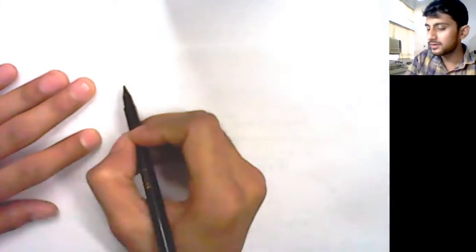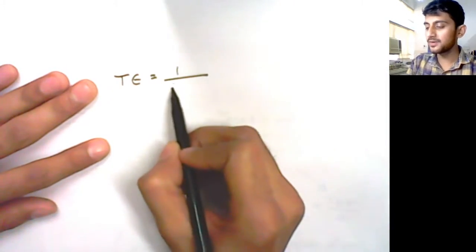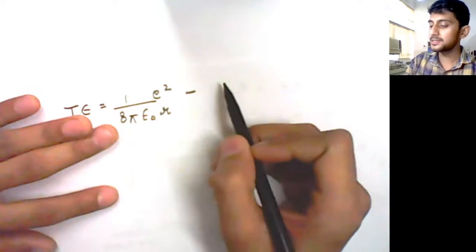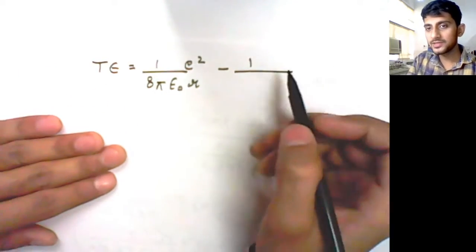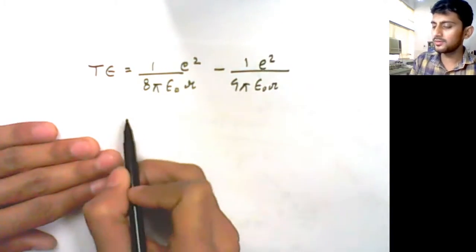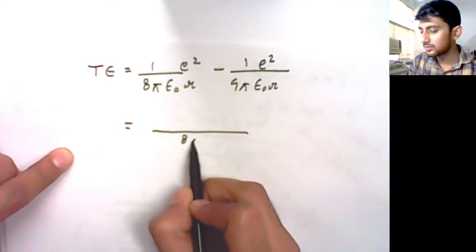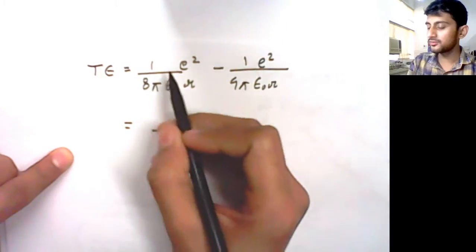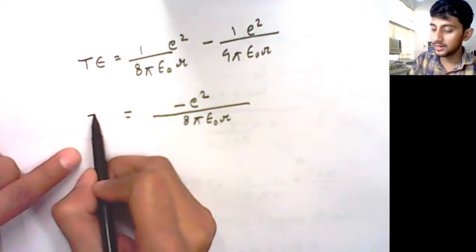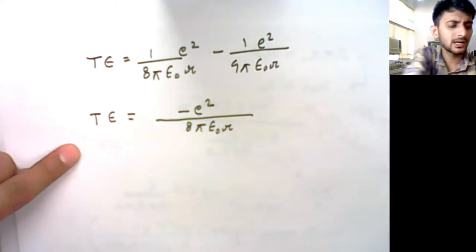The total energy equals kinetic plus potential energy. Kinetic energy is e²/(8πε₀r) and potential energy is −e²/(4πε₀r). Taking LCM of 8πε₀r: we get 1 − 2 = −1, so total energy comes out to be −e²/(8πε₀r). This is your total energy.